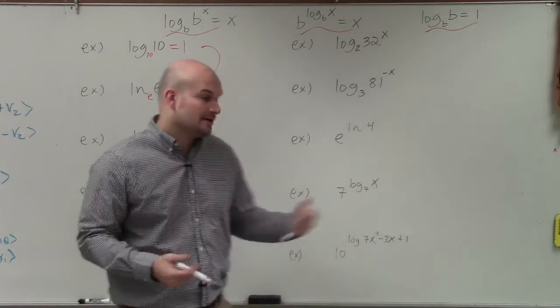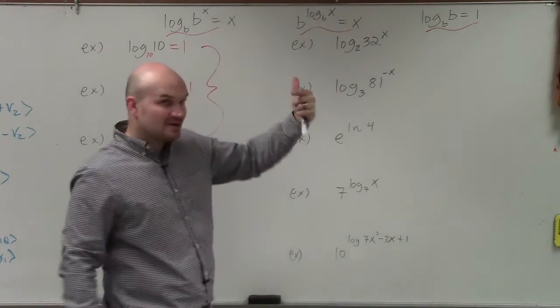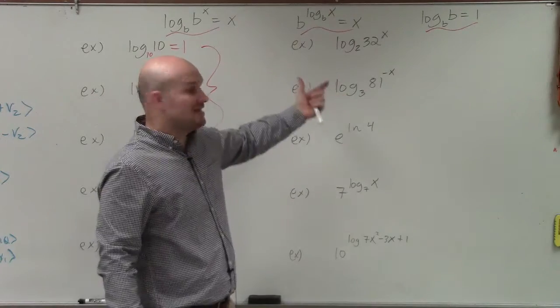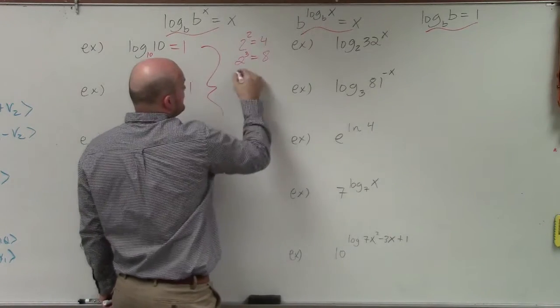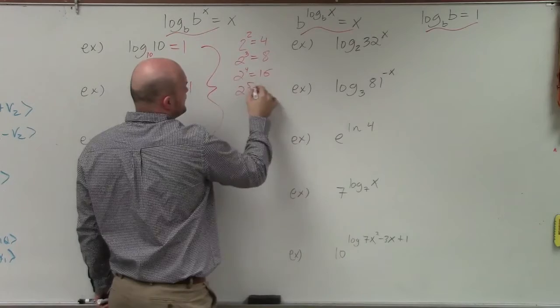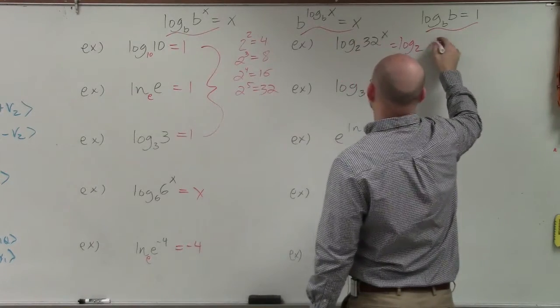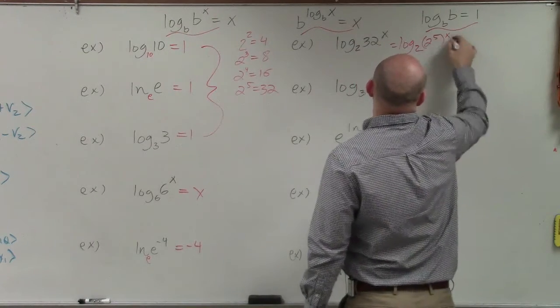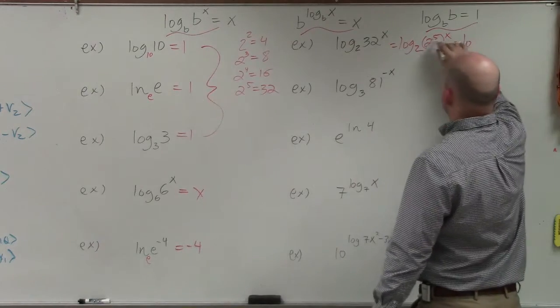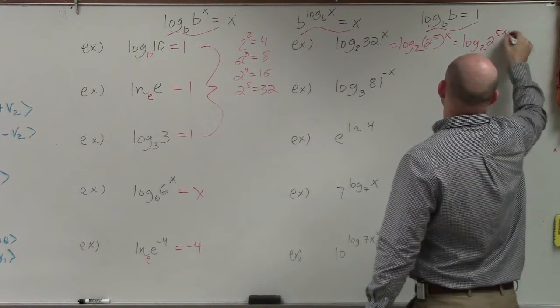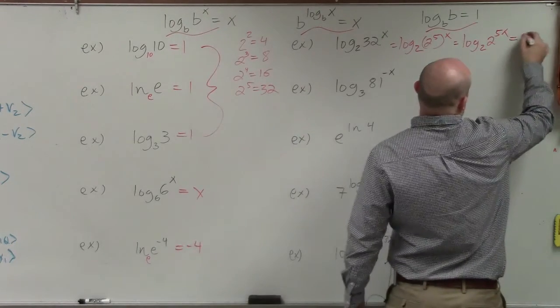Now, in this case, it can get a little confusing here. We have log base 2 of 32 equals x. Well, 2 and 32 are not the same. However, if I can rewrite 32 as a base of 2, then they are the same. Let's think about it. 2 squared is 4, 2 cubed is 8, 2 to the fourth is 16, and 2 to the fifth is 32. So I can rewrite 32 as log base 2 of 2 to the fifth power raised to the x. Then by using my power rule, I can multiply the x and the 5. So I have log base 2 of 2 to the 5x. Now, you can see, now I can use my rule. And the log base 2 of 2 is just going to give me a final answer of 5x.